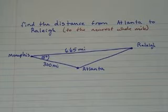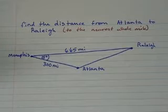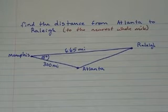You're given that Memphis to Raleigh is 665 miles, Memphis to Atlanta is 300 miles, and that the angle between Memphis-Raleigh and Memphis-Atlanta is 15 degrees.